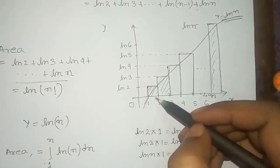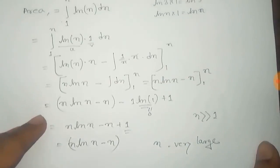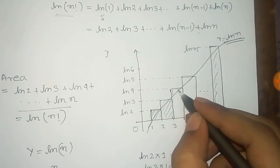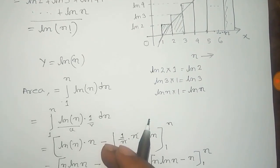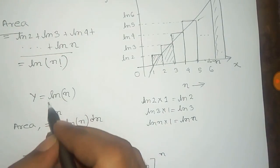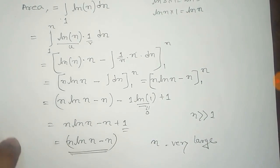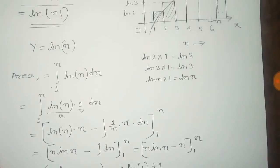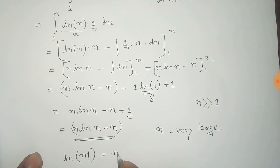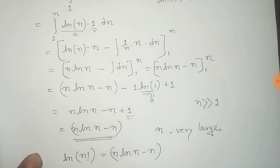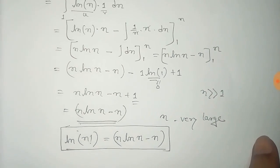We got the area under the smooth curve as n log n minus n, and the area under the step curve as log n factorial. For n very large, we can approximate that these two areas — the smooth curve area and the step curve area — are the same. So we can equate them and say: log n factorial equals n log n minus n. Thus we get the Stirling approximation, or Stirling formula, very easily in this process.